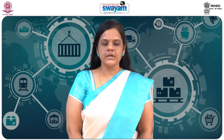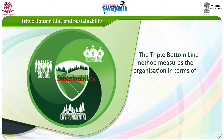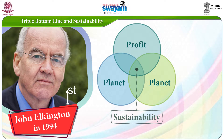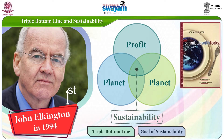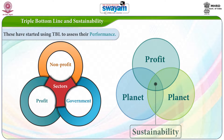Two other bottom lines, namely societal and environmental impacts, have been brought in to assess the performance of companies along with profits. The triple bottom line method measures the organization in terms of social, environment, and economic sustainability. The phrase people, planet, and profit best describes the triple bottom line and the goal of sustainability. The term triple bottom line was first coined by John Elkington in 1994 and reported further in his book Cannibals with Forks: The Triple Bottom Line of 21st Century Business in 1999. Today many nonprofit, profit, and government sectors have started using triple bottom line to assess their performance.